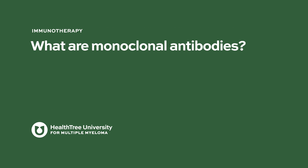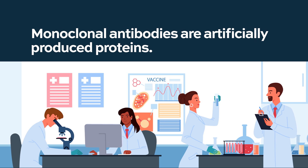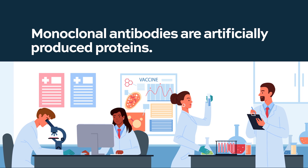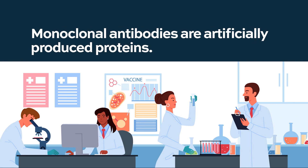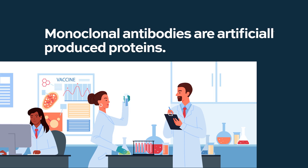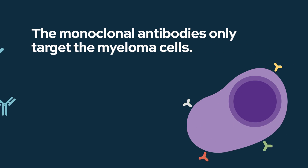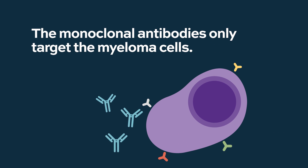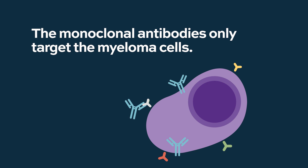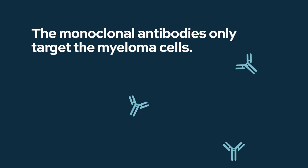Monoclonal antibodies are proteins that are artificially produced. They look almost the same as the antibodies you produce in response to bacteria or viruses, but monoclonal antibodies have a special target — they only target the myeloma cell. The question is: how do those monoclonal antibodies recognize the myeloma cells?